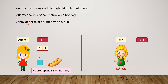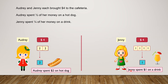Jenny spent one-fourth of her money on a drink. If we divide Jenny's money into four parts, we will get one dollar, one dollar, one dollar, and one more dollar. This shows that one-fourth of four dollars is one dollar. So Jenny spent one dollar on a drink.